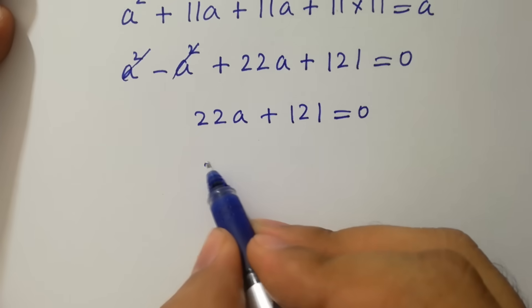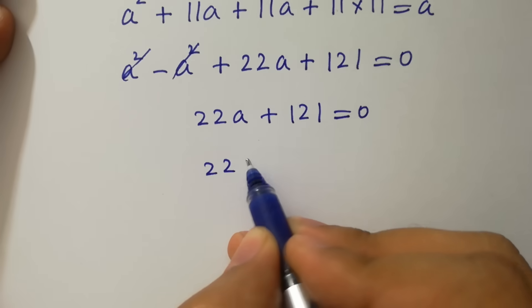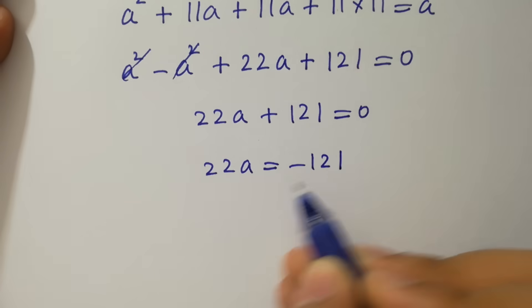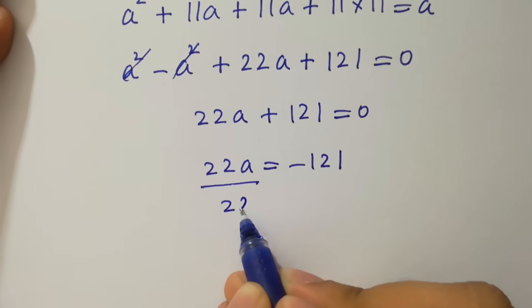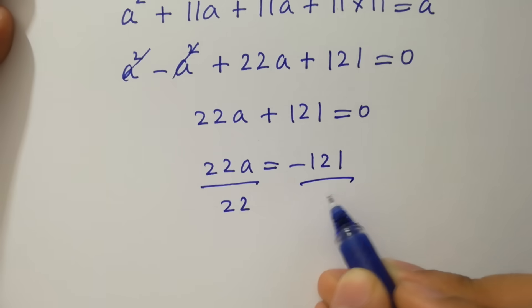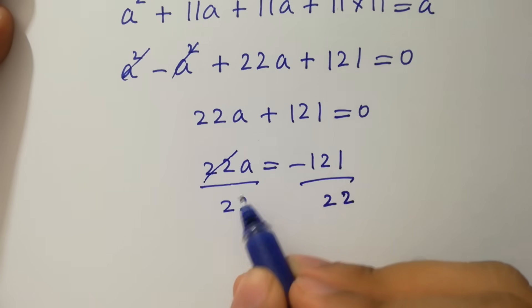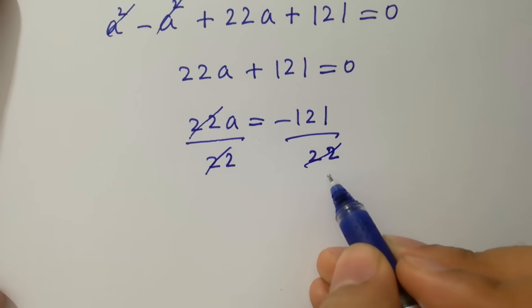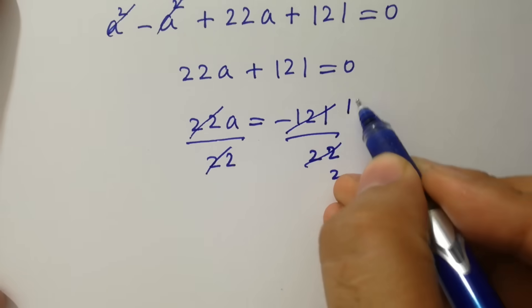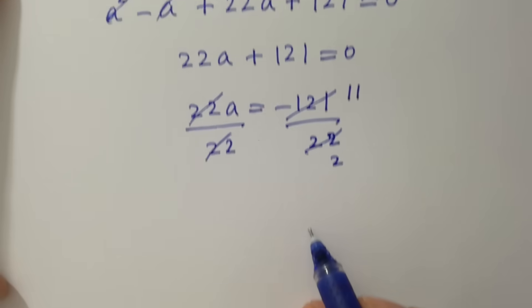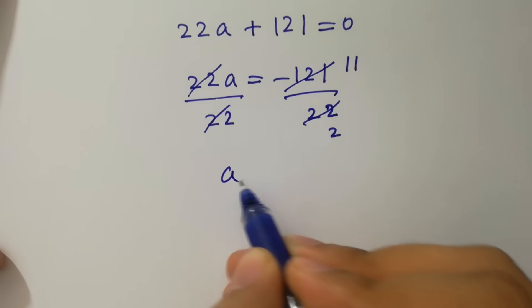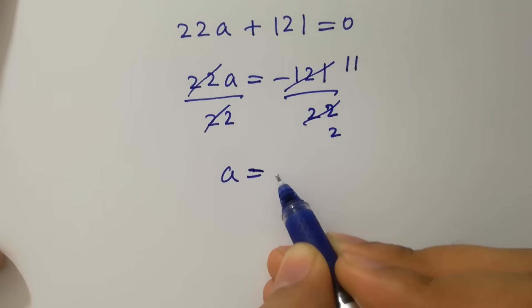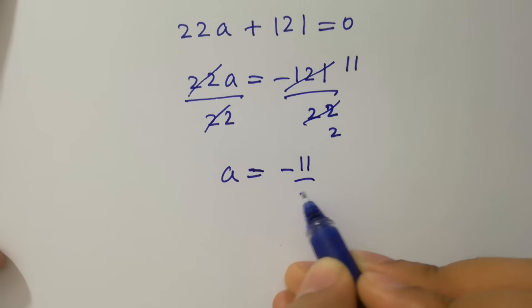So 22a equal to minus 121. To find a, divide by 22 on both sides. 22 cancels, and 121 over 22 simplifies — since 121 is 11 times 11 — to give a equal to minus 11 over 2.